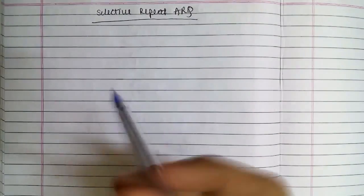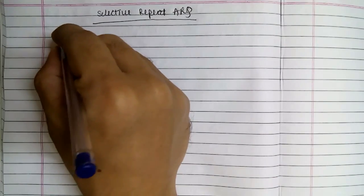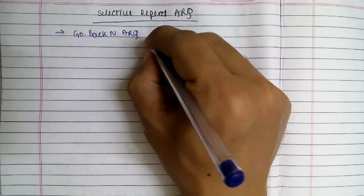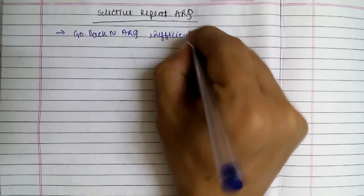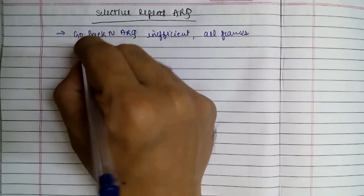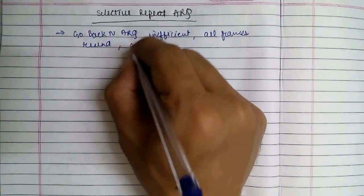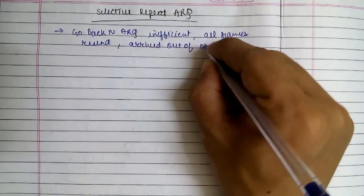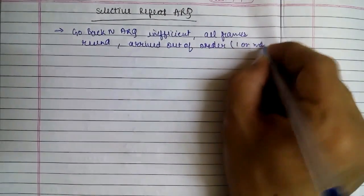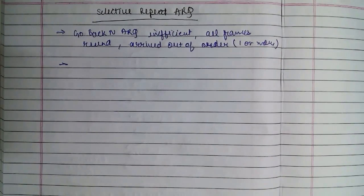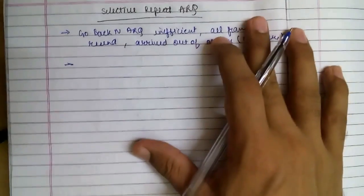Selective Repeat ARQ. Hi everyone, the protocol we will be looking at today is Selective Repeat ARQ. As we all know, Go Back N ARQ was inefficient as we had to send all frames if one of the frames arrived out of order. But in this Selective Repeat ARQ, we will be able to accept the frames if they are within a window size. So let's get to it.